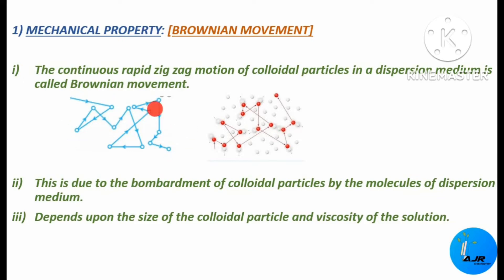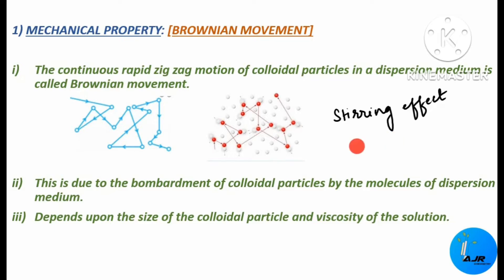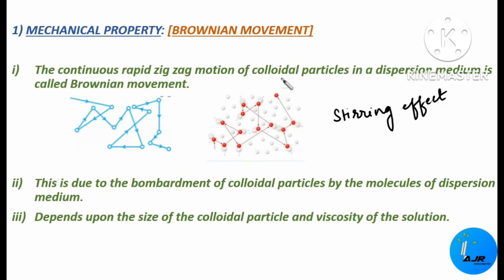The particles will be continuously moving. This Brownian motion has a stirring effect. Greater the size of the colloidal particle, lesser will be the Brownian motion. If the colloidal particle is having a larger size, then lesser will be the Brownian motion; if the size is smaller, the Brownian motion will be high. It is inversely proportional to the size of the colloidal particle.